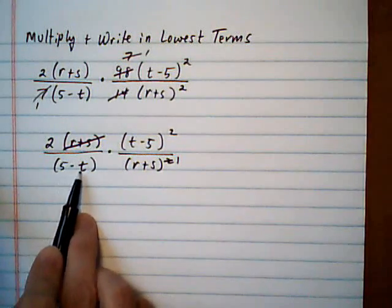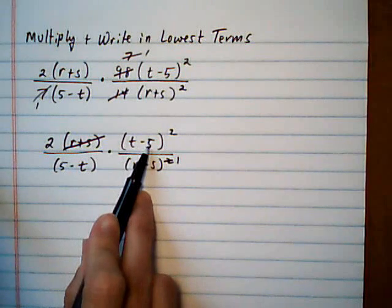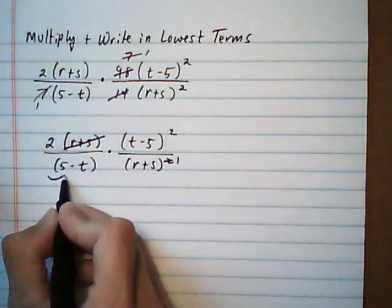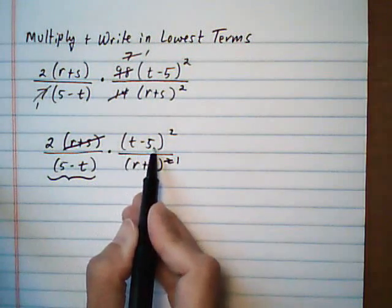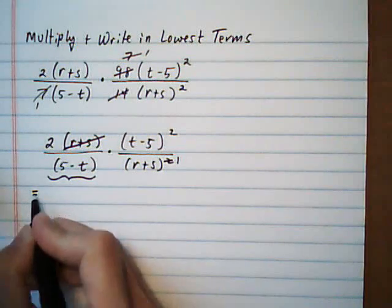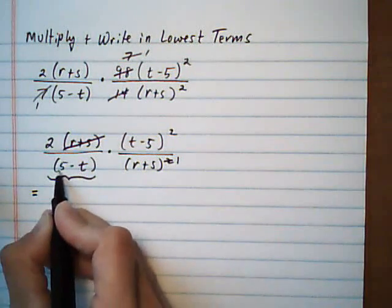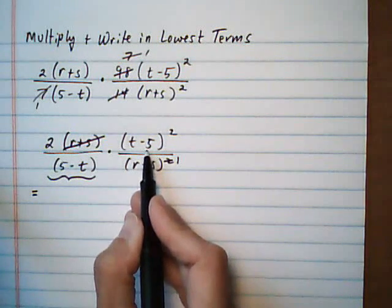It's really tempting here to cancel the 5 minus t and the t minus 5, but we can't cancel them because they're not identical. They have to be identical factors. But we can rewrite this one so that it looks like t minus 5. So first of all, to see the transition, reorder these so t comes first and 5 second, so we have the same order as this binomial.